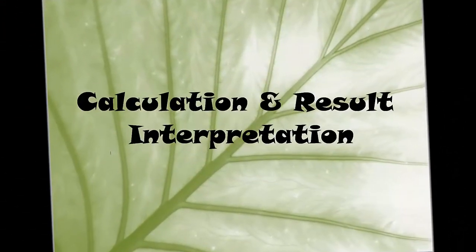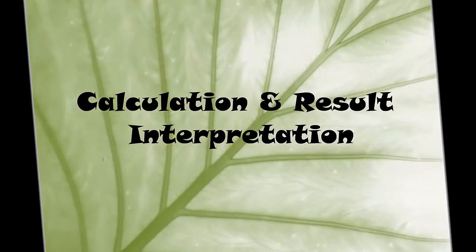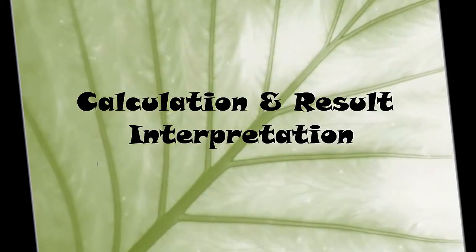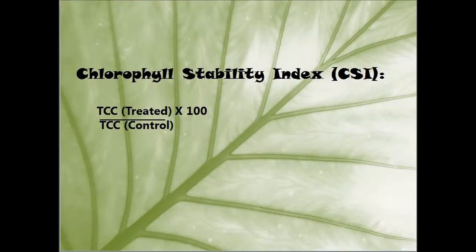Calculation and result interpretation: Total chlorophyll content is calculated by multiplying the OD value with the volume of the sample and dividing it by the weight of the sample. Here, 34.5 is the specific absorption coefficient for the pigments at 652 nm. Chlorophyll stability index is the ratio of total chlorophyll content of the treated sample to the control sample, expressed as a percentage.